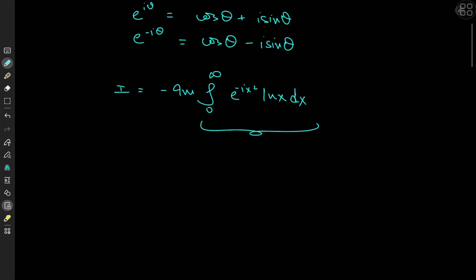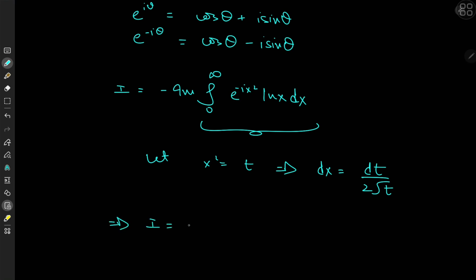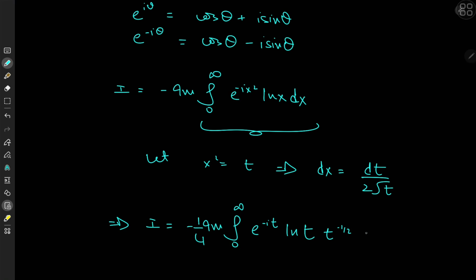The first step is to let x² = t, which implies dx = dt / (2√t), and the limits of integration are unchanged. This gives us negative the imaginary part of the integral from zero to infinity of e^(−it) times log(√t) times (1/(2√t)) dt. Using log properties, the exponent of 1/2 becomes a coefficient of 1/2, and combined with the 1/2 from the differential, we get a factor of 1/4. We're left with t^(−1/2) — extremely important — and dt.